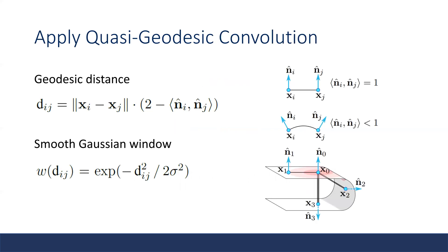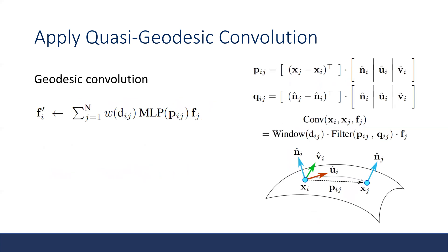Then we apply a quasi-geodesic convolution for each surface point. Here it defines a geodesic distance and uses such geodesic distance to build a smooth Gaussian window. The smooth Gaussian window is used in a geodesic convolution. We sample the surface point XJ in the neighborhood of XI and compute the convolution between each pair of XI and XJ.